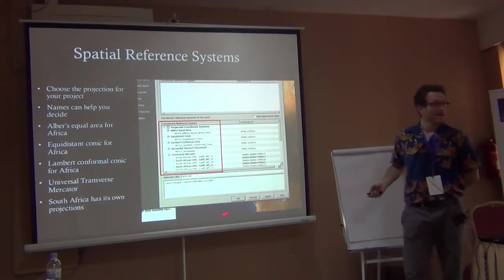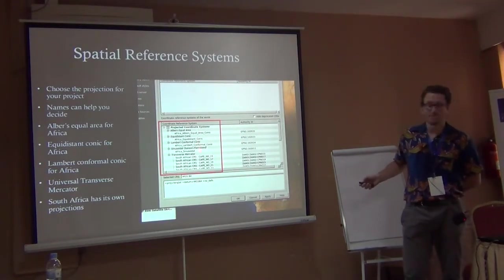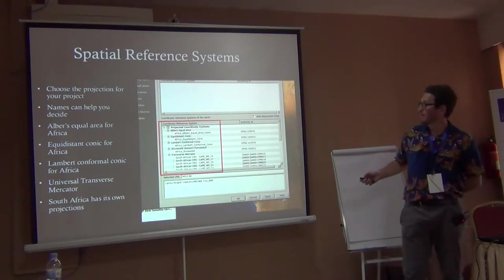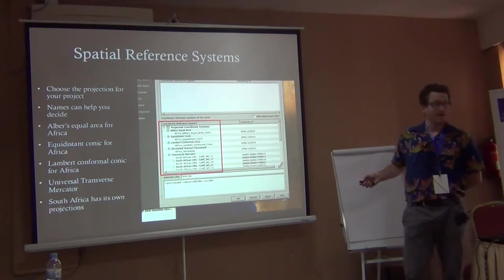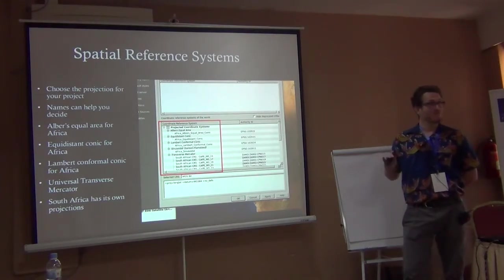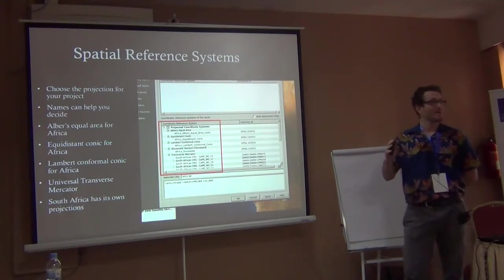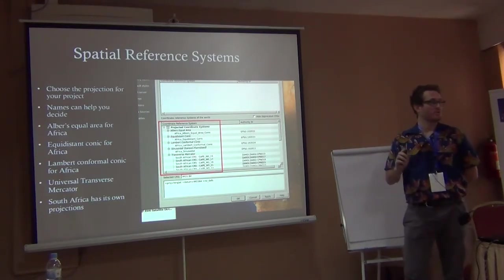This is a view of QGIS, which we'll get into later — this is the interface that allows you to choose your coordinate reference system. A quick search for Africa brings up different projection systems: the Albers equal area, a popular conic equal-area projection for Africa; an equidistant conic for when you're interested in distances; and more complex ones like sinusoidal. If you're only working in a small area, any of these would probably minimize distortion adequately.